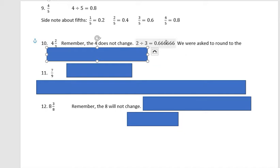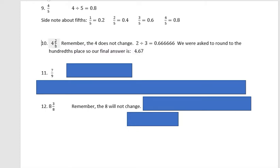Well, the third place out is a six. Rounding back to the second place should give me a seven. So my final answer is 4.67 or four and sixty-seven hundredths. Remember the four doesn't change. We also have to really think about the third number if we're rounding back to that second place.